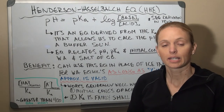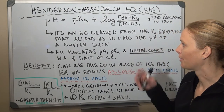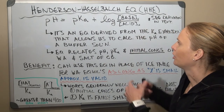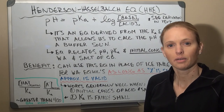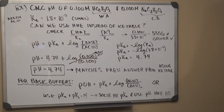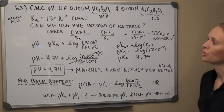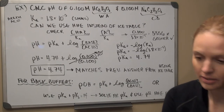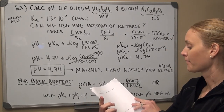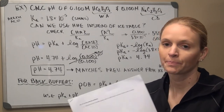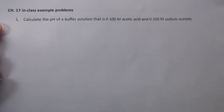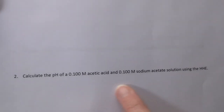Now we're going to take a look at an example problem using the equation so you can become familiar with it. The calculation we'll use is the exact same problem we looked at previously when calculating pH for buffers — we're going to redo it using the Henderson-Hasselbalch equation.